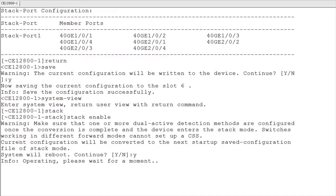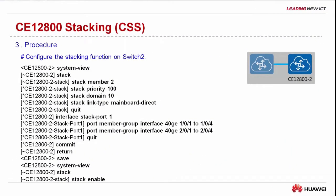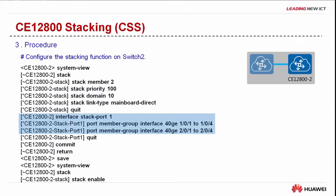The switch automatically restarts after the stacking function is enabled. Configure switch 2 after configuring switch 1. The process of configuring switch 2 is similar to that of configuring switch 1: configure stack attributes, create a logical stack port, add physical member ports to it, save the configuration, and enable the stacking function. Note that the two switches must have the same stack domain ID and stack connection mode configured. Otherwise, the two switches cannot set up a stack.